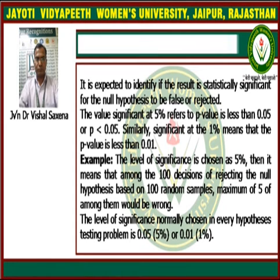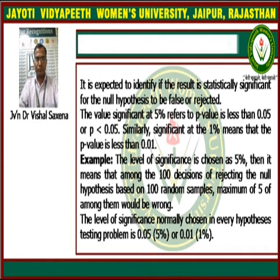So the level of significance may sometimes lead to wrong decisions. The level of significance is normally taken as 5% and 1% on a percentage basis. If we take these on the basis of probability, the level of significance can be taken as 0.05 and 0.01 respectively.